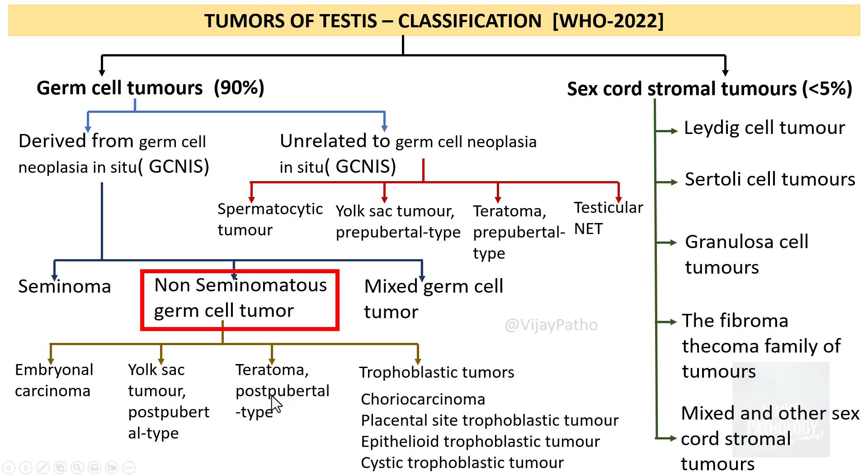There are different non-seminomatous germ cell tumors including embryonal carcinoma, yolk sac tumor which is post pubertal type, teratoma which is post pubertal type again, and then we have trophoblastic tumors like choriocarcinoma, placental site trophoblastic tumor, epithelioid trophoblastic tumor and cystic trophoblastic tumor. So in this session let's learn about embryonal carcinoma.